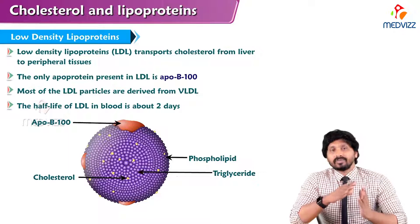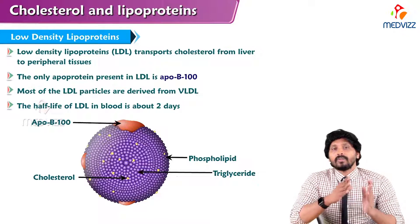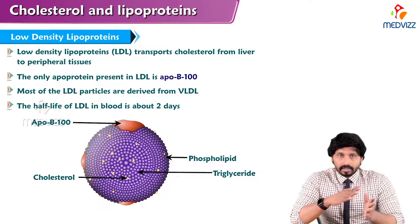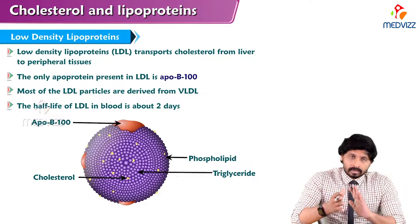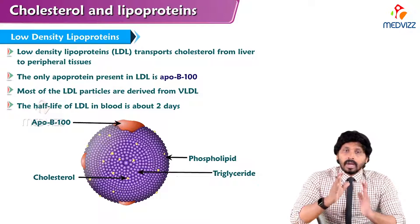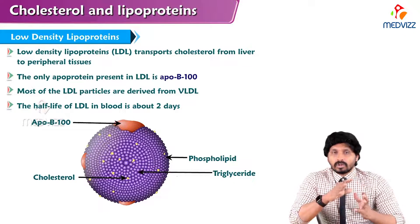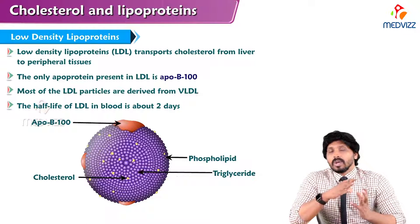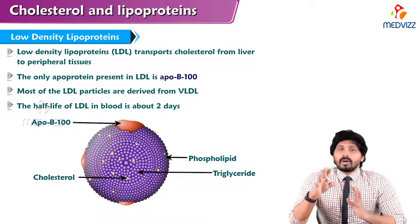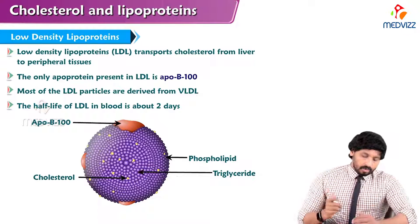What is the speciality of this LDL? Chylomicron and VLDL both are concerned with the transportation of triglycerides — that is a different aspect, like exogenous or endogenous triglycerides. And here in LDL metabolism, we will be talking about how cholesterol, that means endogenously produced cholesterol, is transported to other parts of the body.